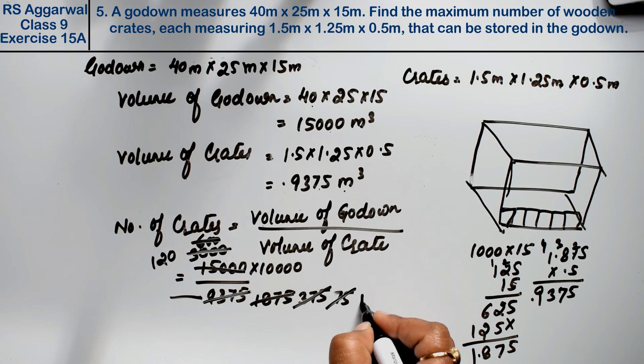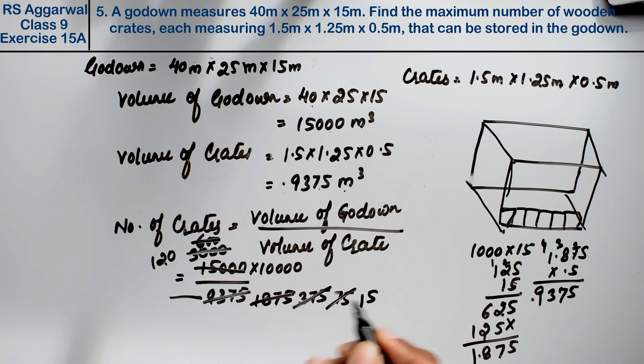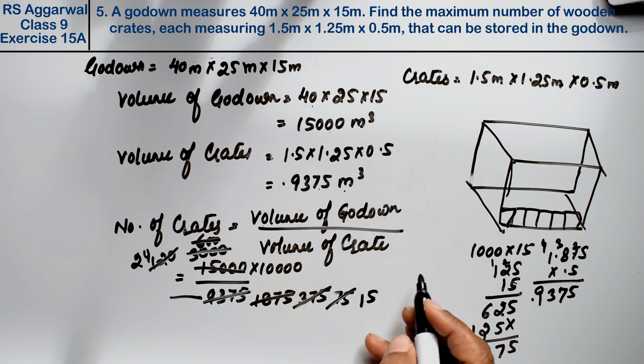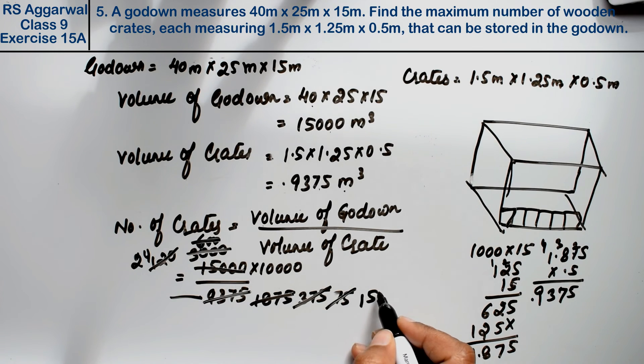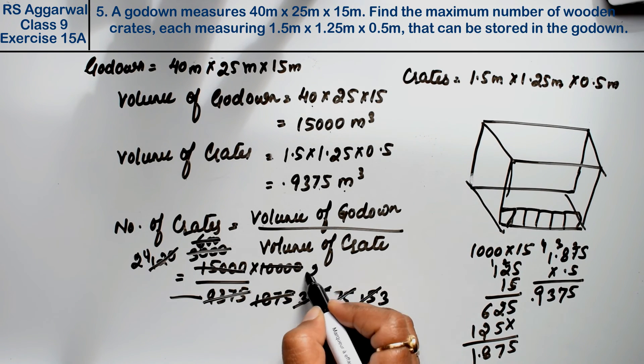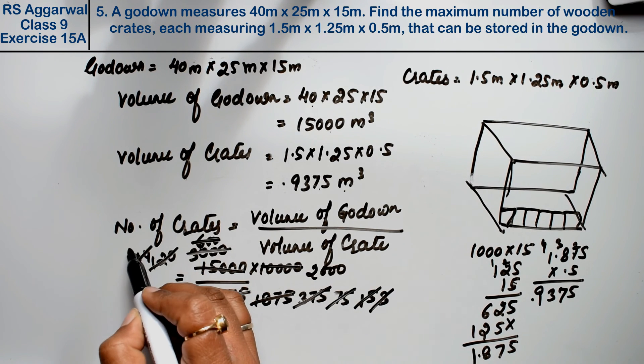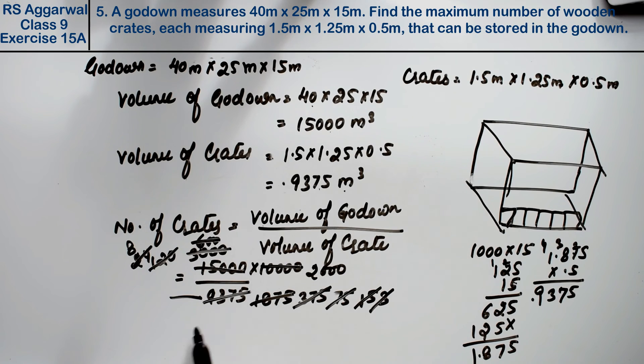Continuing the division: 5 into 5 is 1, 5 into 25 is 5, 5 into 20 is 4. Then 5 into 15 is 3, and 3 into 24 is 8. Completing the calculation gives us 16,000. So, 16,000 is the answer.